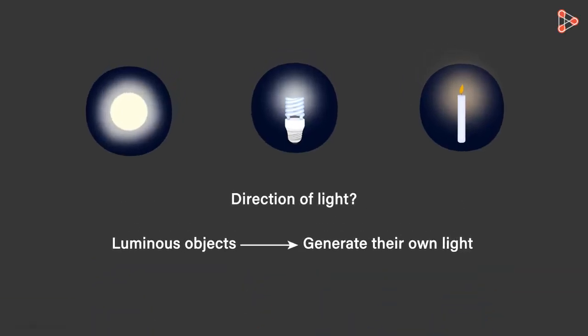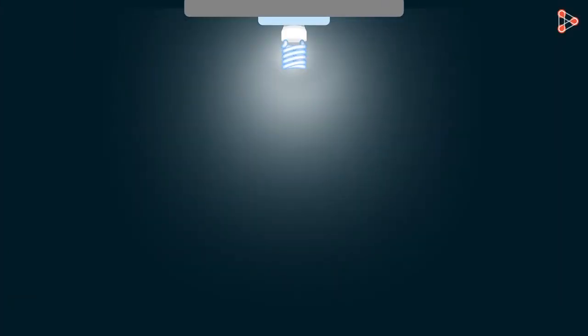Which direction do luminous objects emit their light? They emit light in all possible directions. Consider a fluorescent bulb which is glowing. It is emitting light in all directions.